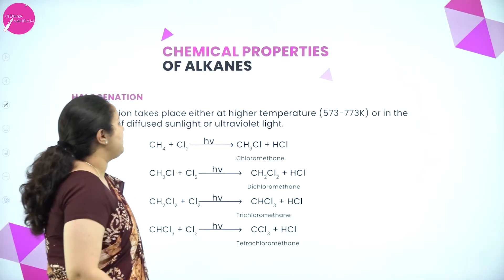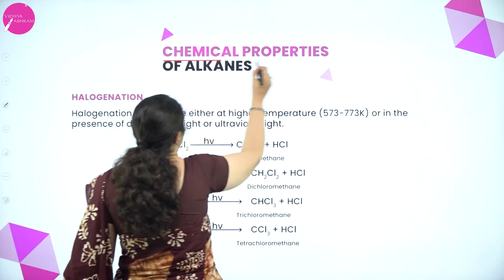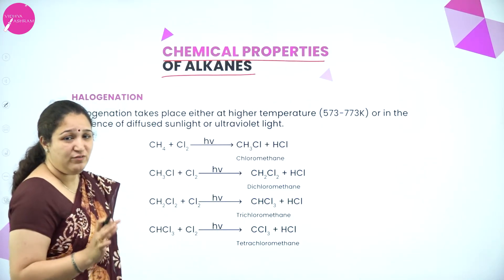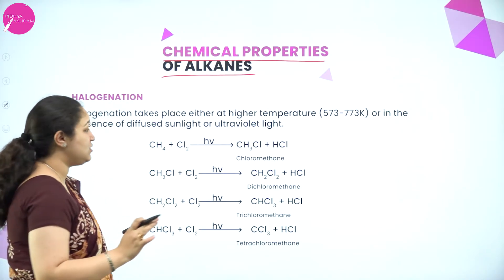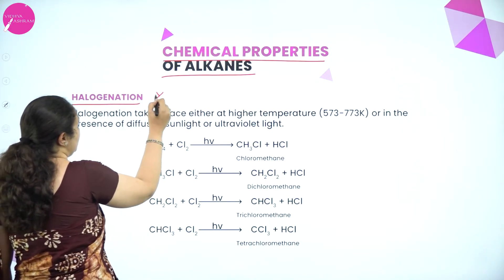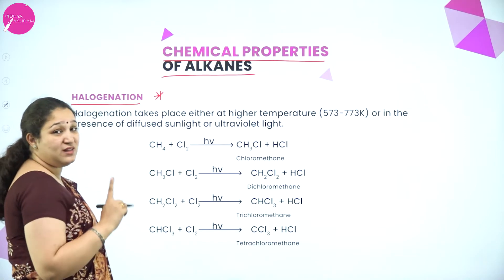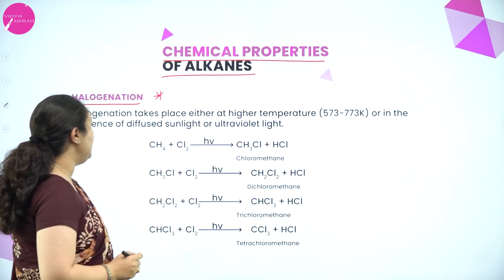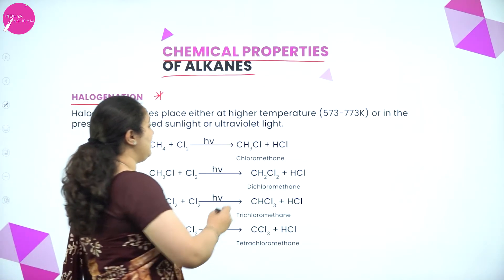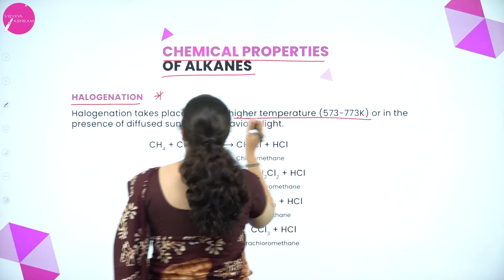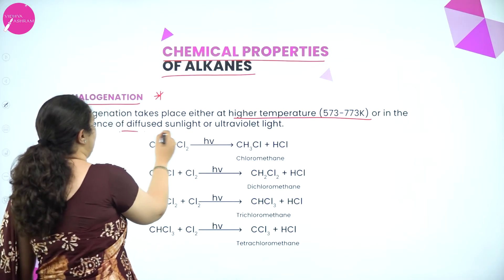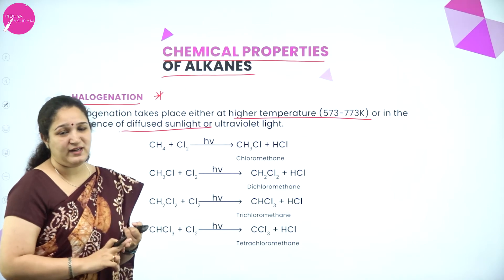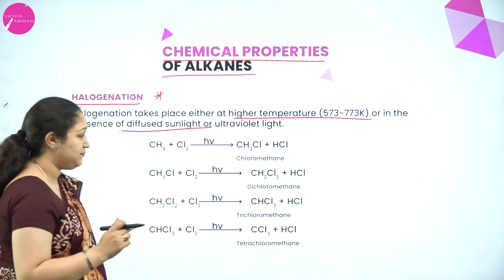Next are the chemical properties of alkanes. The first one is halogenation, which is very important — especially the mechanism. Halogenation takes place at high temperature or in the presence of sunlight. So in the presence of sunlight or at high temperature, halogenation takes place.